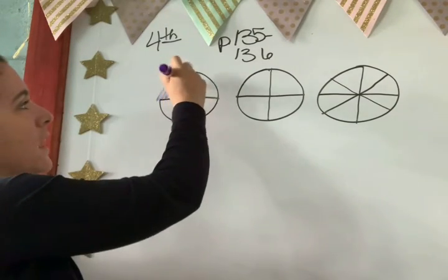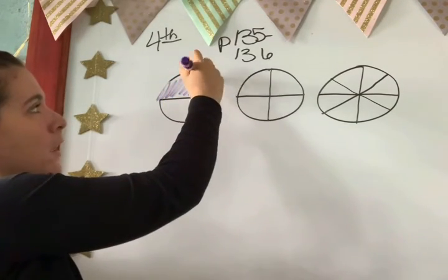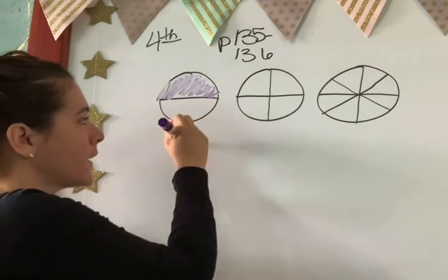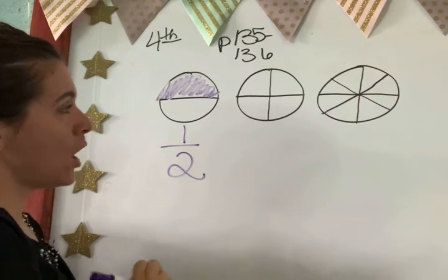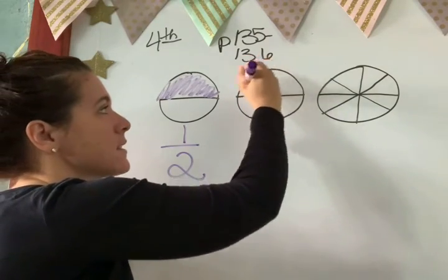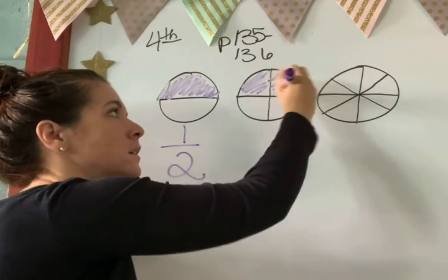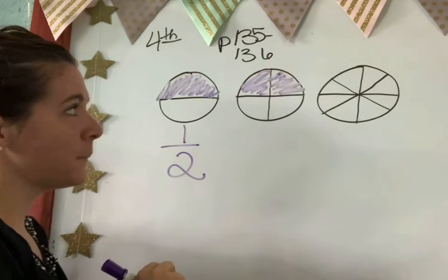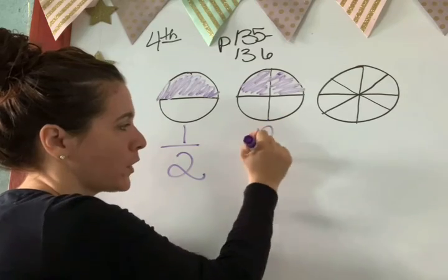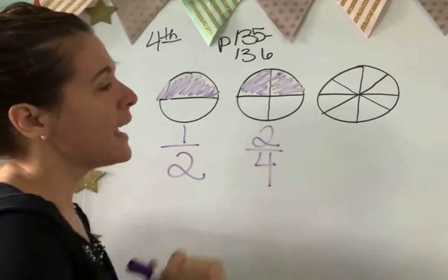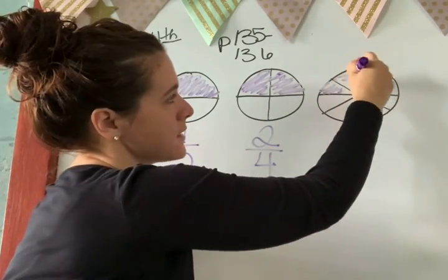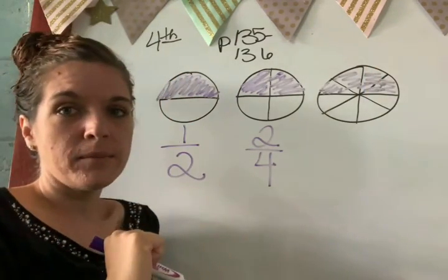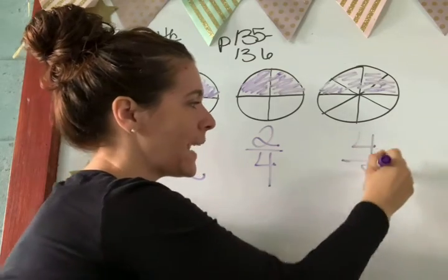Remember if I had this fraction right here and I color this top part, sum of what is this fraction? 1 half, right? Okay, but if I color these, 1, 2, what's my fraction? Scarlet? 2 over 4. Excellent.